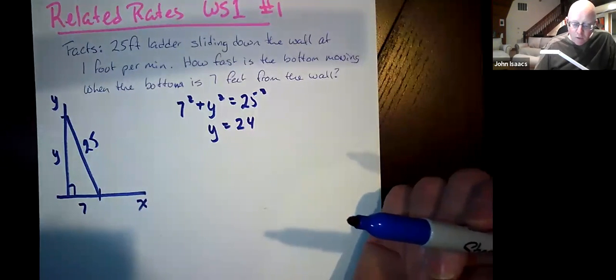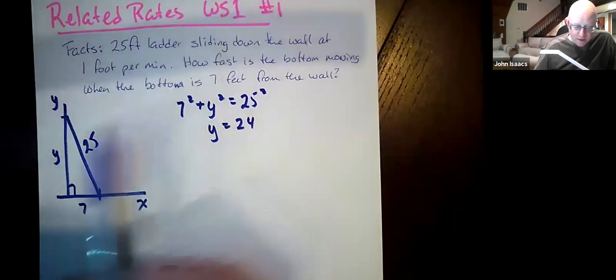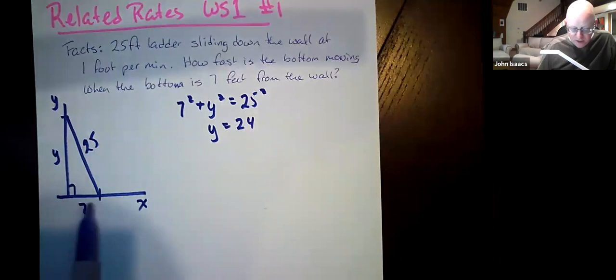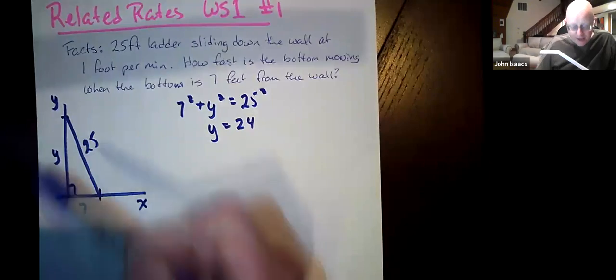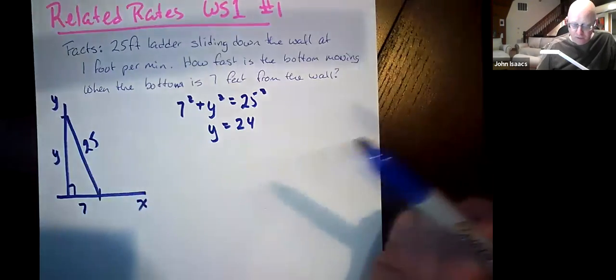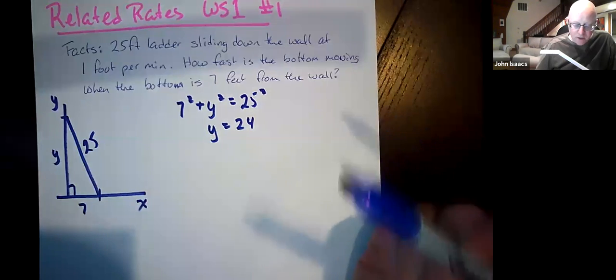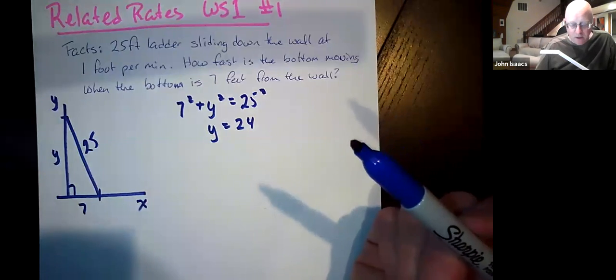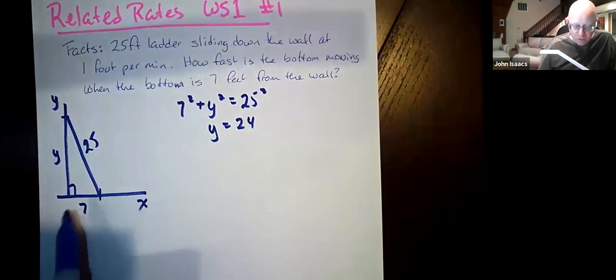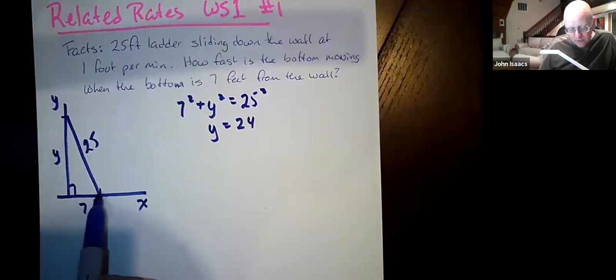Now, what we want to know is the change in x as y is changing at one foot per minute. So again, we go to the Pythagorean theorem because what we want to know is how x is changing. Well, that means we can't let x be fixed at seven, x has to become a variable.